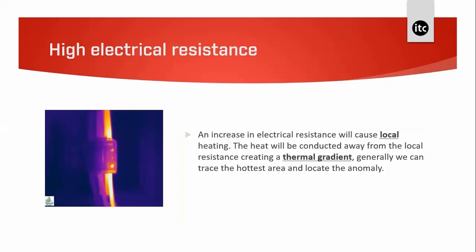Recognizing thermal gradients is key to electrical thermography. Looking at this image, we can see a connection where the cables on either side are warm near the connection but get cooler further away. Bad connections make up the majority of electrical faults detected — there is always a thermal gradient with the hottest area at the high resistance point. Note that 'high resistance' is comparative — higher than other good parts of the circuit. The connection temperature is related to electrical load, so surveys should be undertaken under normal operating conditions if possible.